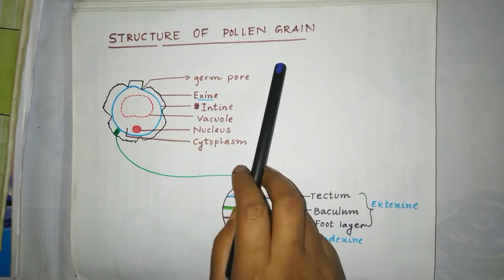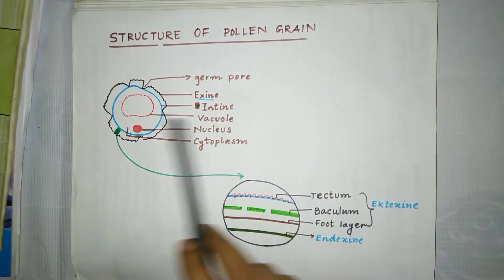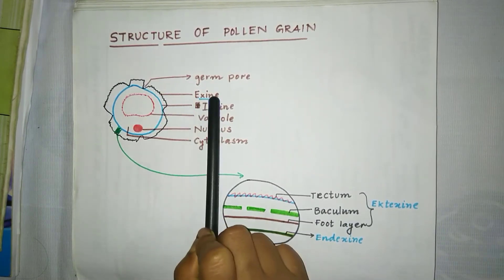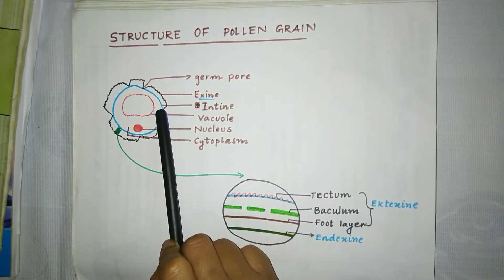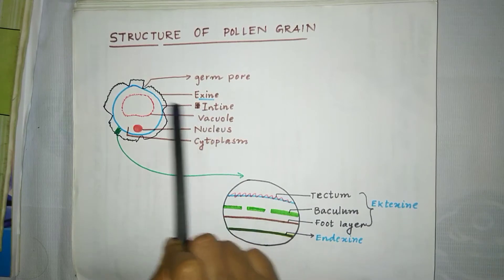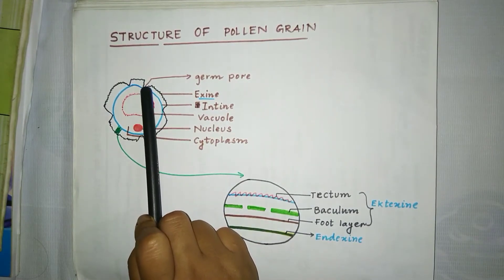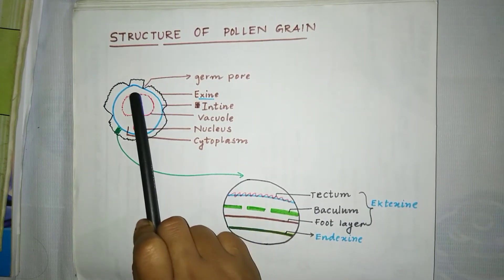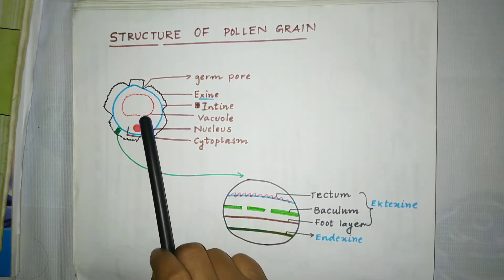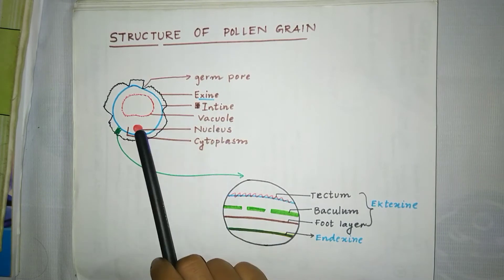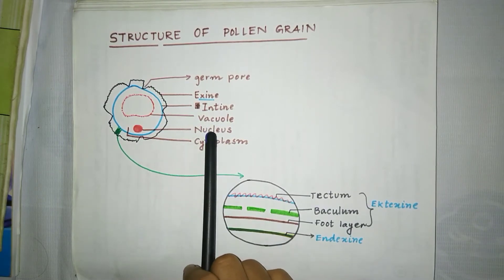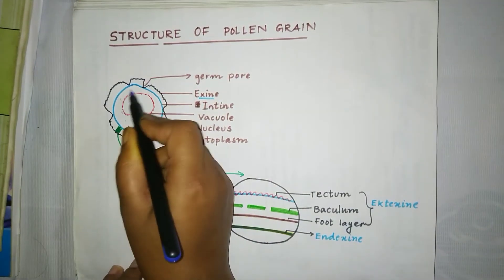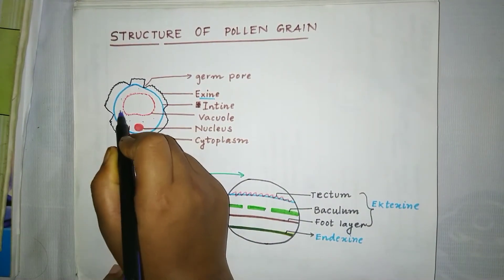Now we will see the structure of pollen grain. The outer structure is known as exine and the inner portion is known as entine. The portion where exine is absent is known as germpore. Inside the pollen grain, one vacuole is present, nucleus is also present, and the dot-like structure is known as cytoplasm.